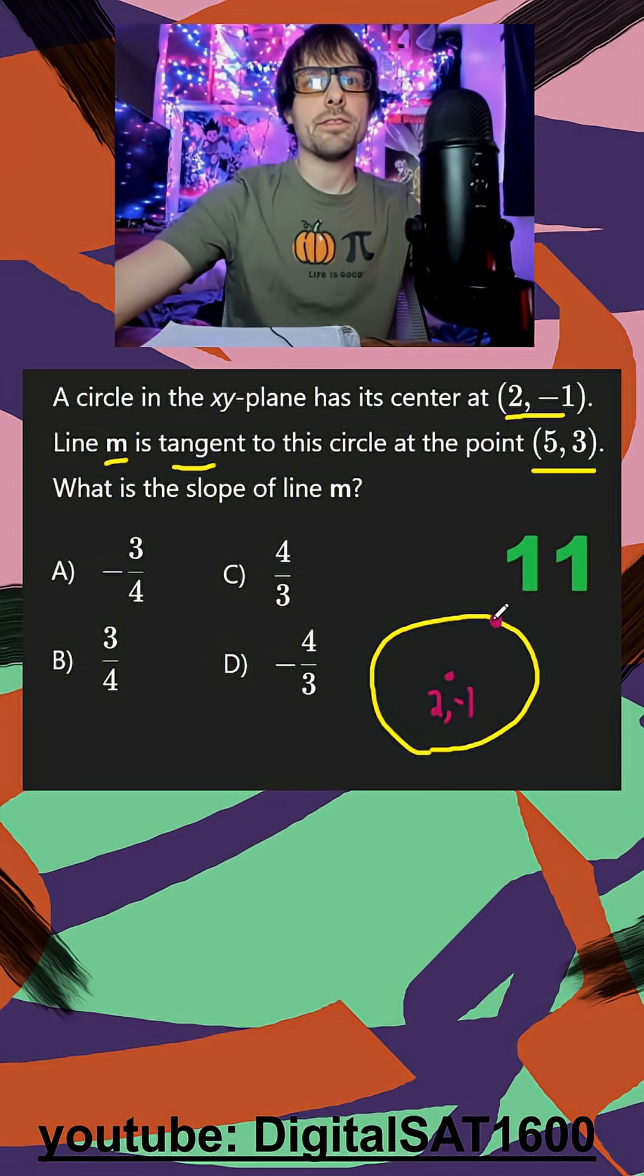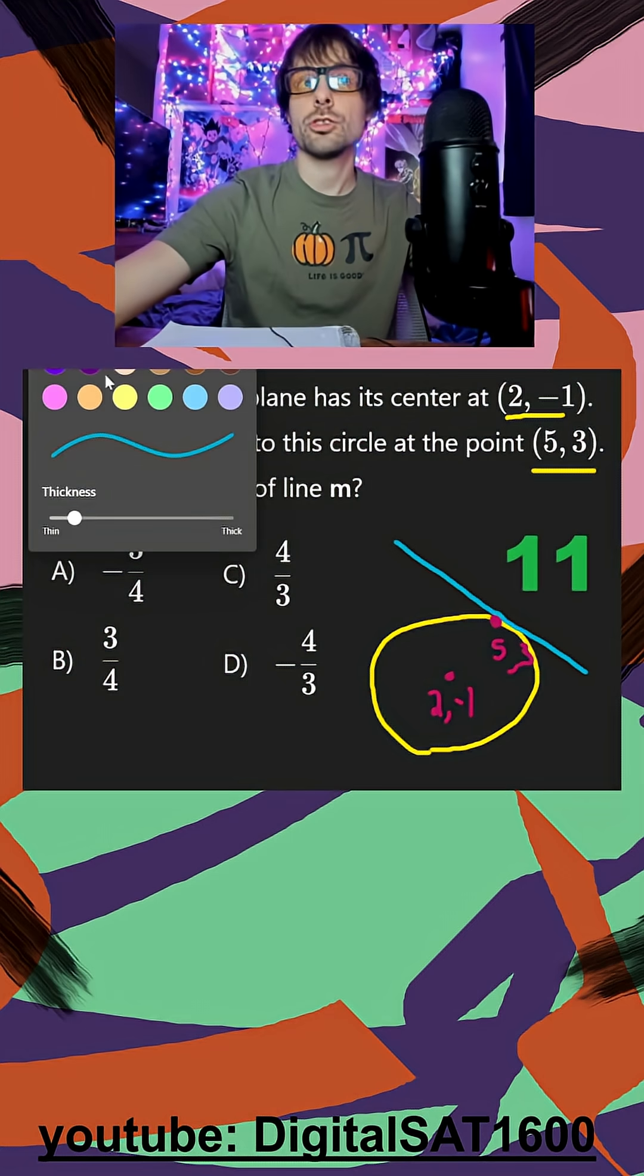And I know this 5, 3 is going to be an endpoint, because in order for that line m to be tangent to our circle at 5, 3, that means it comes across and it touches the circle just at that point.